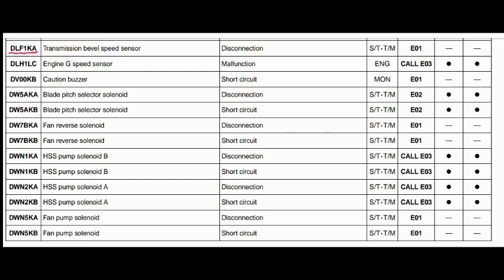Our first code is DLF1KA. The faulty part is the transmission bowl speed sensor, and the fault is disconnection. The controller related to this fault is the steering and transmission controller, and the action code is E01.